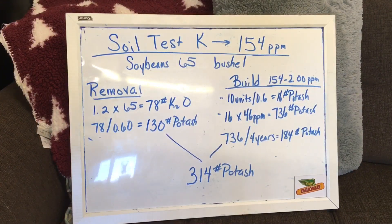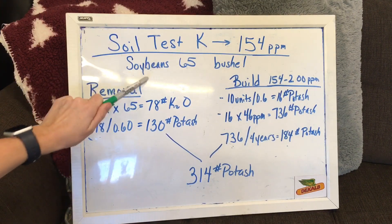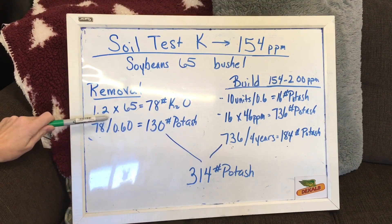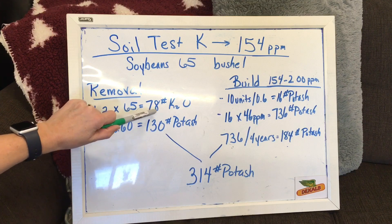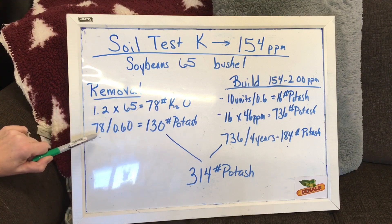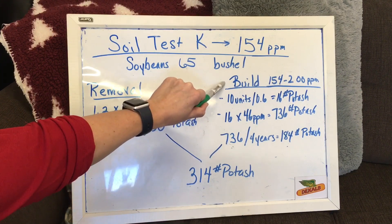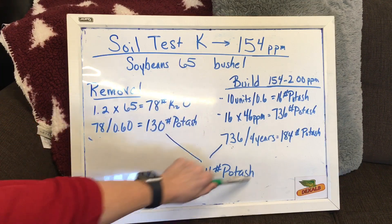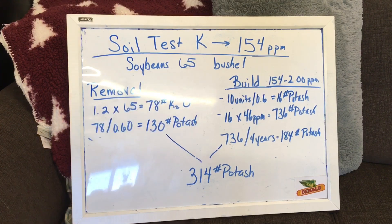When we take a look at soybeans, soybeans per bushel use a lot more potassium. For removal off of 65-bushel soybeans, the process is the same. We have 1.2 units of K2O removed per bushel, times 65 bushels gives us 78 units of K2O removed. Converting to pounds of potash gives us 130 pounds of potash. Using the same build numbers for this acre, that brings us to 314 pounds of potash for removal and build on a 65-bushel soybean crop.